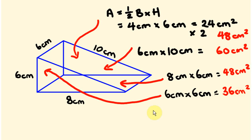Now what we have to do to work out the total surface area is add all our different areas together: 48 plus 60 plus 48 plus 36. If you add all these together, you get the answer of 192 centimeters squared.